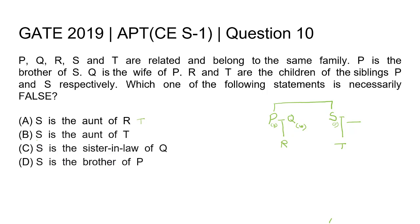Option B is: S is the aunt of T. This contradicts what has been given in the question — according to the question, T is the child of S. So S cannot be the aunt of T. This statement is false, so our correct answer will be option B.